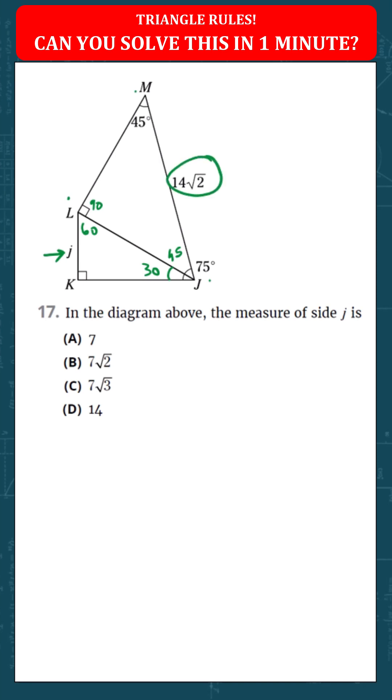According to isosceles triangles, this side would have to be 14 and this side would have to be 14.